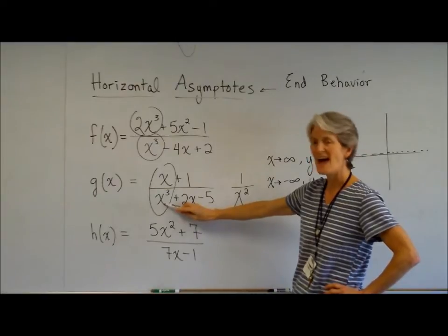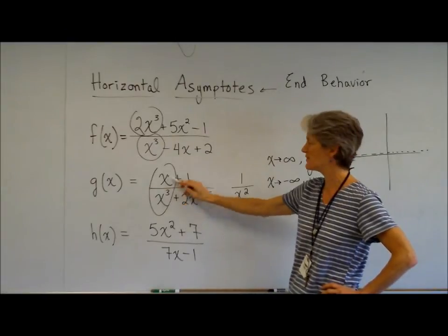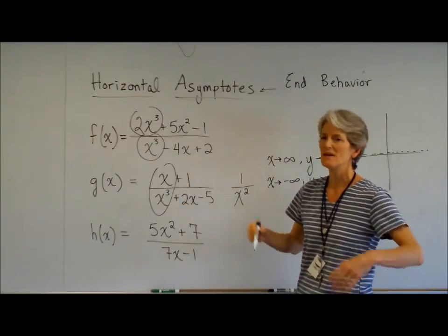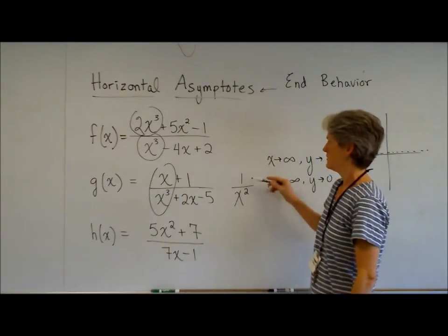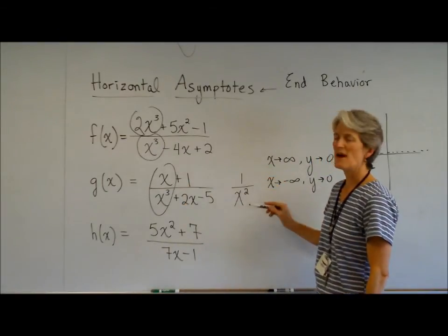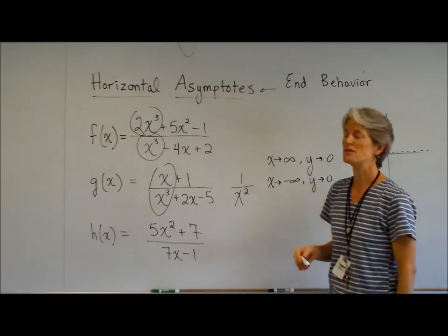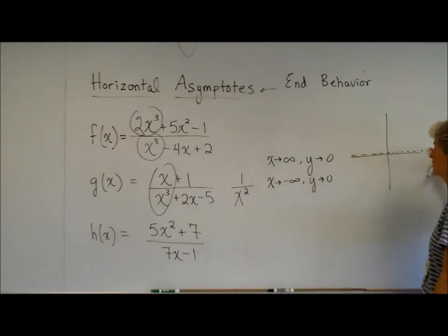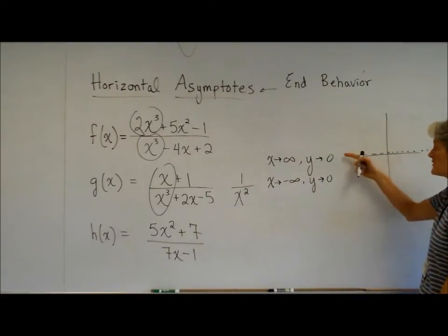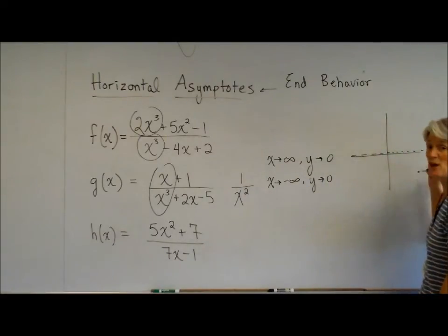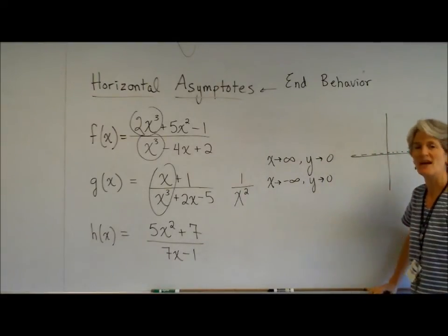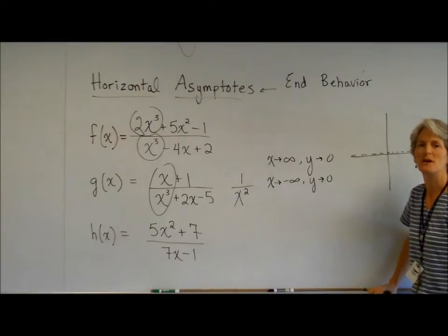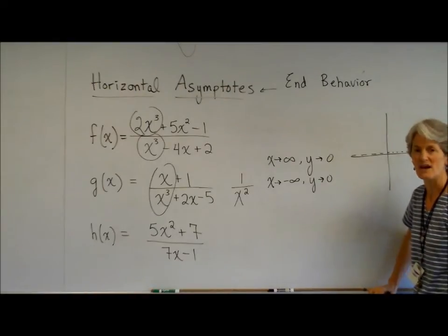The bottom is growing a heck of a lot faster than the top. So a small number divided by a big number approaches zero. I don't know exactly what this graph is going to look like, but I know its end behavior is going to be approaching the X axis.